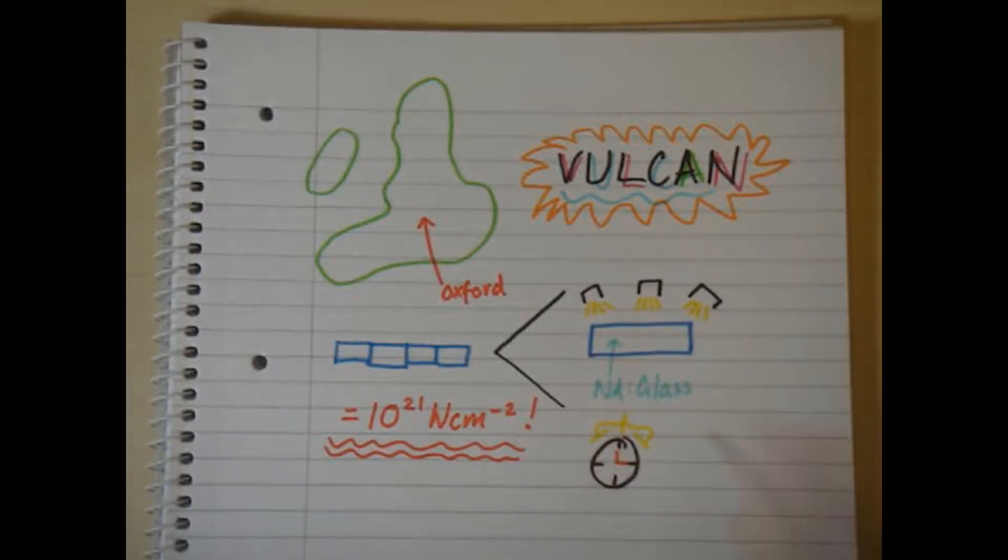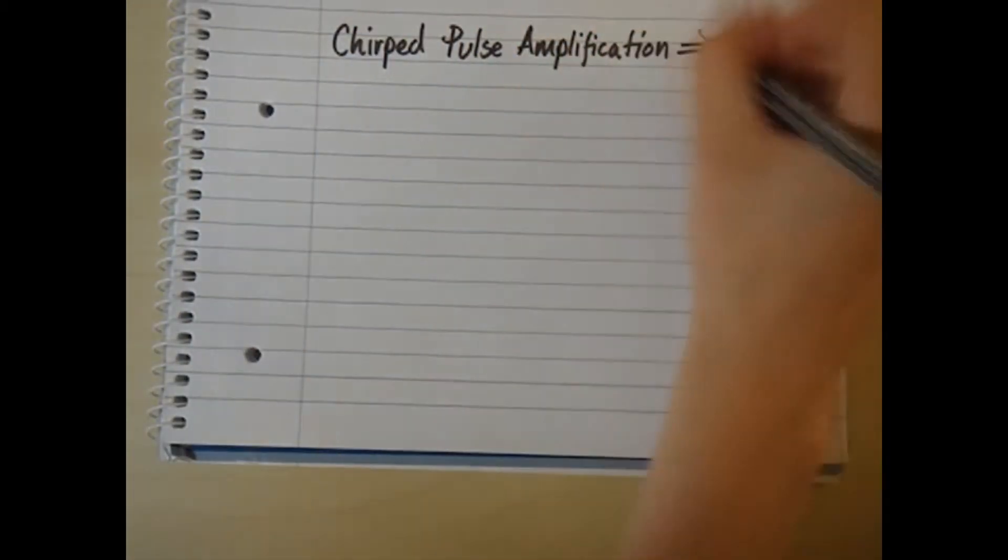To amplify the pulse to this high level, the light beam is stretched in time, amplified, and then recompressed before hitting its target. This is known as chirped pulse amplification.